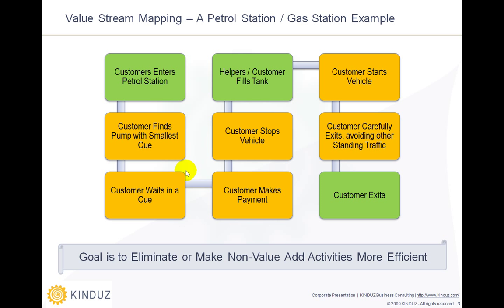For example, take the step where a customer finds a pump with the smallest queue. To make it more efficient, you could put up display boards clearly stating which pumps are free. In many places in India, a person directs each car or two-wheeler to the pump with the smallest queue. For the waiting-in-queue step, many petrol pumps in India will wash your windows or check tire pressure while you wait, making it more emotionally satisfying — someone is taking care of cleaning your car while you wait.